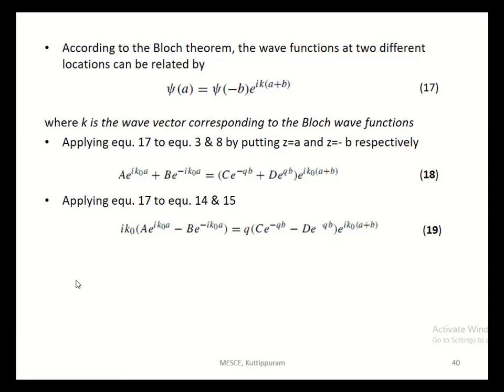Now Bloch's theorem is applied. According to Bloch's theorem, the wave functions at two different locations are related as ψ(A) = ψ(−B)·e^(ik(A+B)), where k is the wave vector. Applying this theorem to the well and barrier equations by substituting z = A and z = −B respectively, we get A·e^(ik₀A) + B·e^(−ik₀A) and C·e^(−qB) + D·e^(qB) multiplied by e^(ik(A+B)).